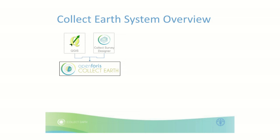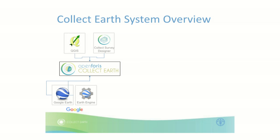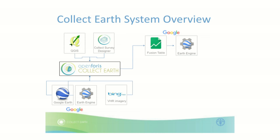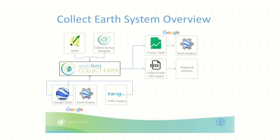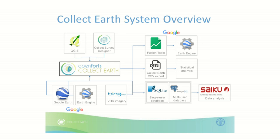So how is it organized? First, you need a sampling design and your survey. Currently we're using QGIS to create the sampling design, and then a survey you can create using the CollectSurvey designer, which is also free. You put them on top of Google Earth, and we also bring Google Earth Engine as a source of satellite imagery — giving you access to all the products available through Google Earth Engine, as well as Bing Maps. You collect your data in the cards you created using CollectSurvey, then export to Fusion Tables where you can analyze the data on Google Earth Engine, or export to CSV for use in another software. All data is stored in a database — single user or multi-user — and you can also analyze this data directly in Saiku, which is an analysis tool.